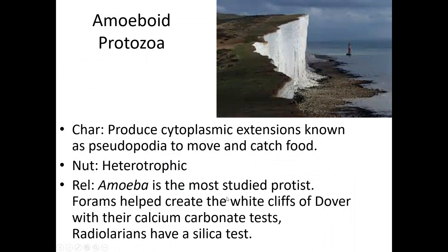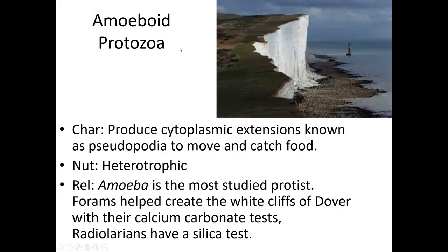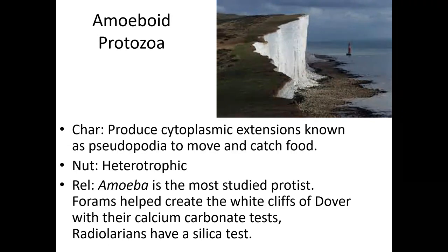Next, amoeboid protozoans. The amoeba at the very beginning eating the paramecia — that is an example of an amoeboid protozoan. It's anything that moves like that amoeba did in the video earlier. The cytoplasmic extensions it used to wrap around the paramecium are called pseudopodia, and anything that moves with pseudopodia is going to be in this group. These guys are all hunters — remember it ate the paramecia, which is what heterotrophic essentially means.